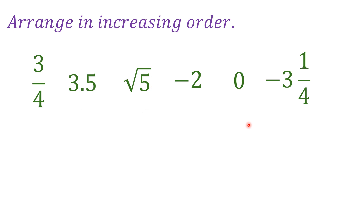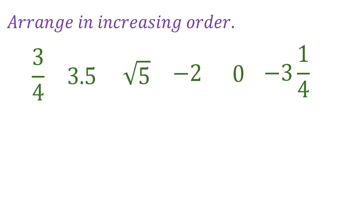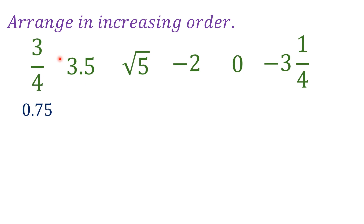Let's start with three-fourths. Three-fourths converted into decimal is 0.75. If you don't know how to convert it, you make the denominator 100 by multiplying both top and bottom by 25, so it becomes 75 over 100 — that's why it's 0.75. Another way is to divide directly: 3 divided by 4 gives you the same result. I have a separate video about converting fractions to decimals if you want more detail.